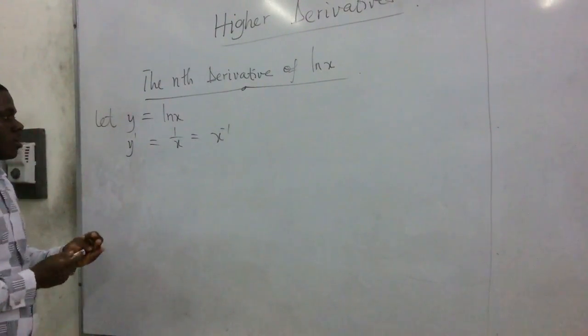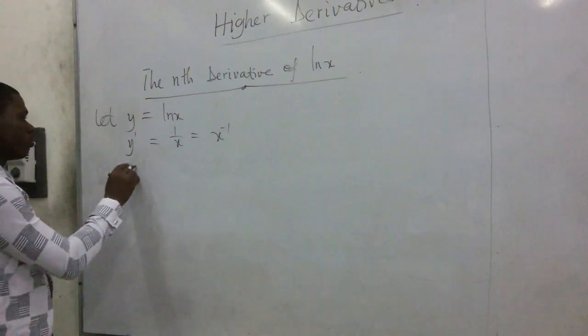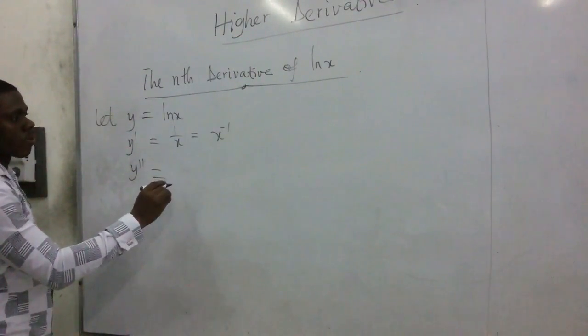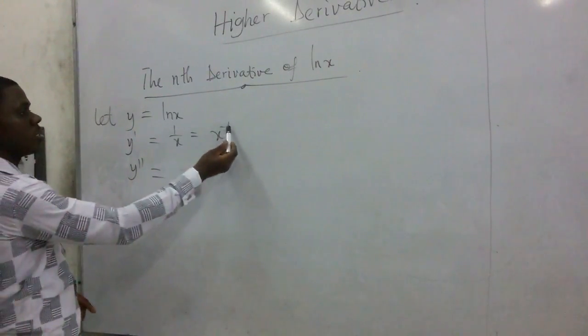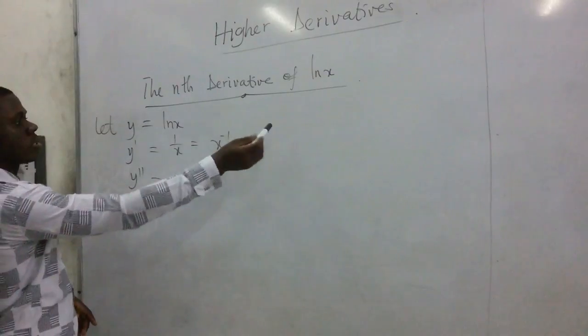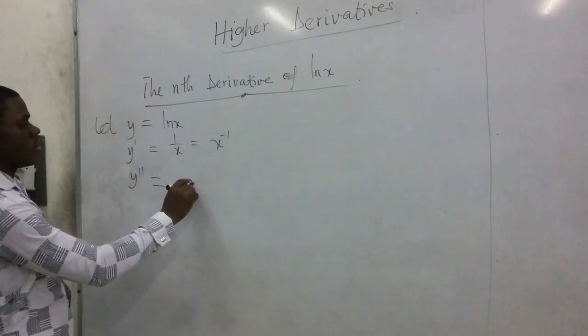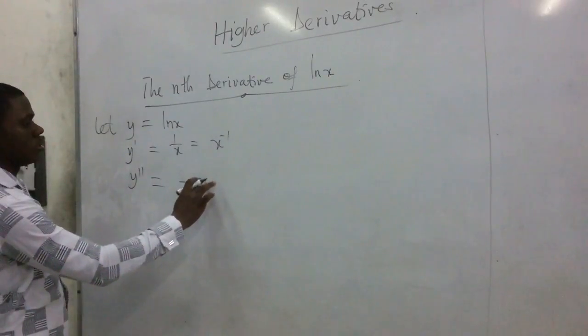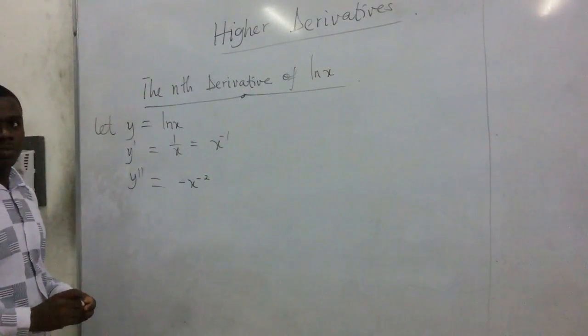The second derivative, so we're using the power rule, means that this negative multiplies here, then we subtract 1 from it, and that gives us negative x. Then if you subtract 1, then it becomes negative x^(-2).